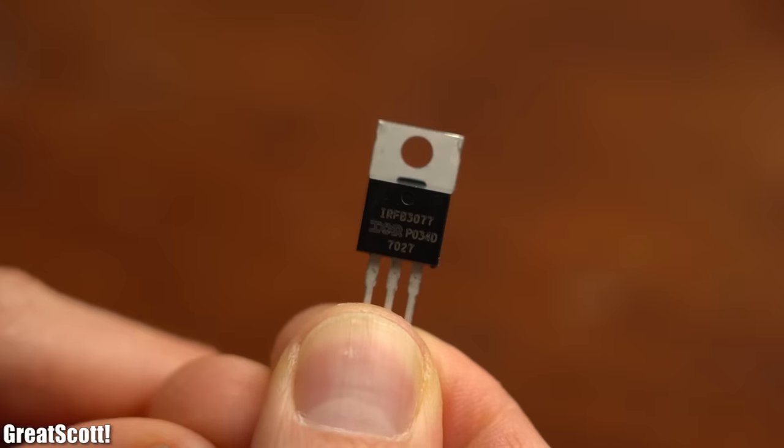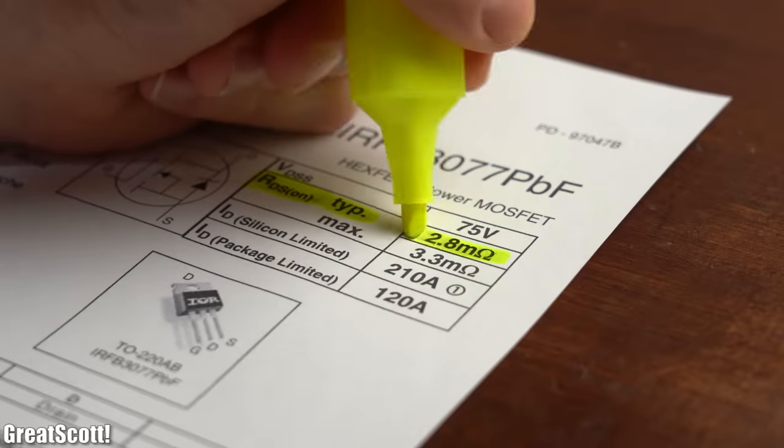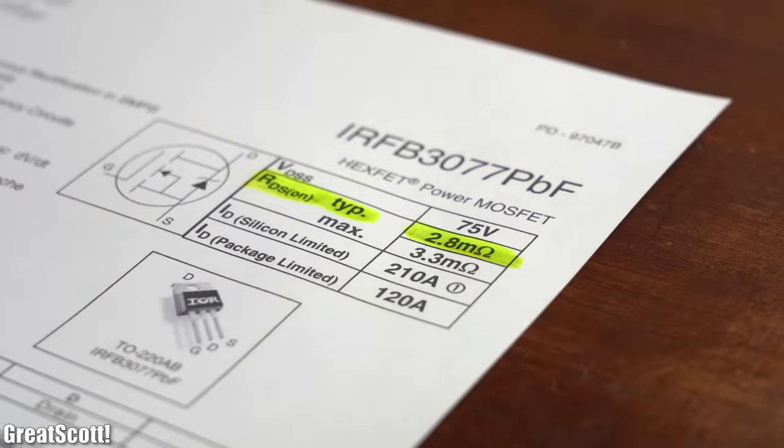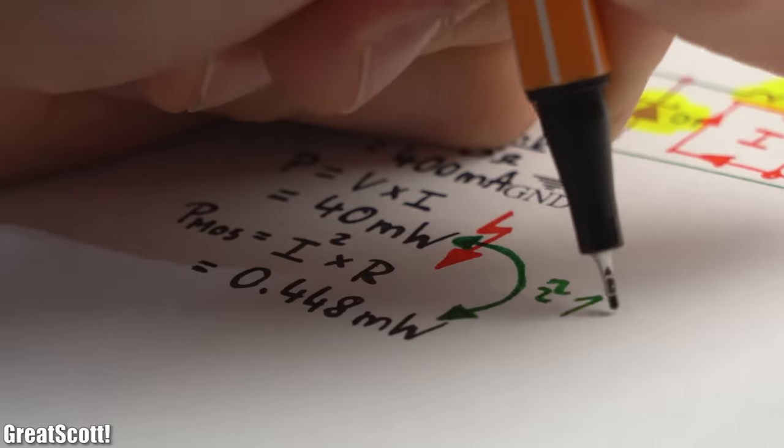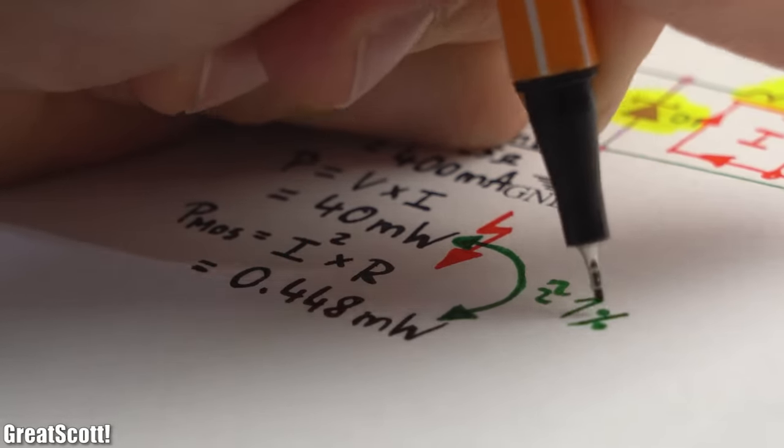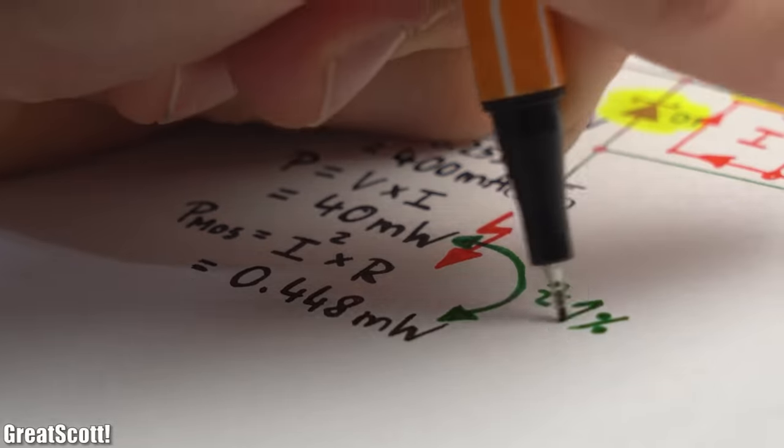And since the MOSFET I want to use comes with a resistance of 2.8 milliohms, the new power loss through it should be around 1% of the diode power loss, which is quite a big difference.